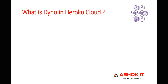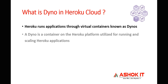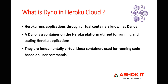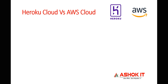Now, how does Heroku execute our applications — what platform does it provide? Heroku uses a concept called Dyno. A Dyno is nothing but a container. When we run our applications on the Heroku cloud, it internally creates virtual containers to execute our application. Those virtual containers are called Heroku Dynos. They are fundamentally Linux containers, and you can scale up your application by increasing the number of Dynos.